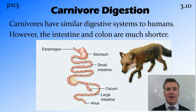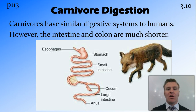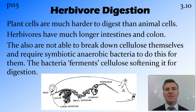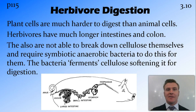We're now going to look at carnivore digestion and how the carnivore digestive system is different to the human digestive system. They have a similar digestive system with all the same parts; however, the intestine and the colon are much shorter in carnivores. The reason is that plant cells are much harder to digest than animal cells. Animal cells have a cell membrane, whereas plant cells have a cell wall made of cellulose, which is very hard to digest. In fact, the enzymes in our digestive system aren't able to digest that cellulose at all. Because plant cells are harder to digest, herbivores have a longer intestine and colon so that the plant cells can spend more time there and have a greater chance of actually being absorbed.